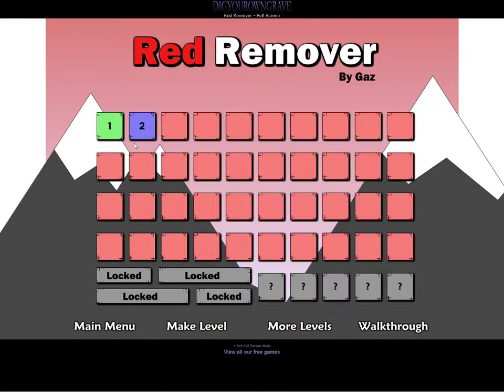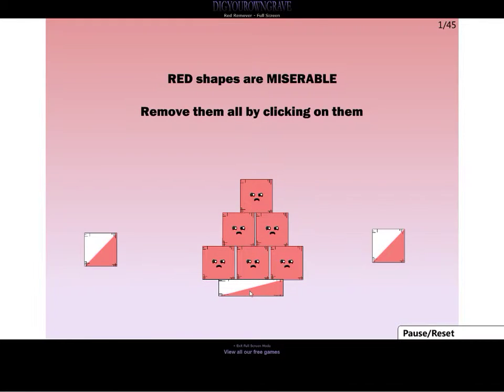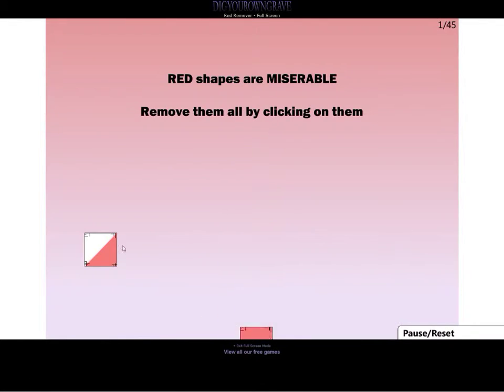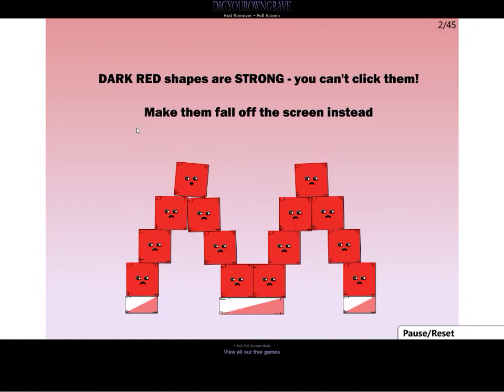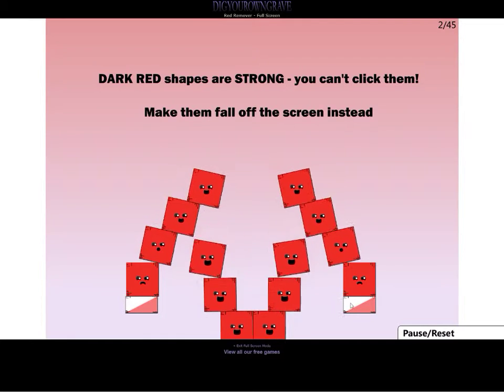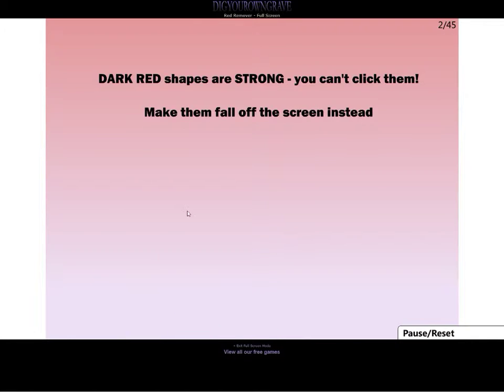For instance, you could beat this with three clicks: click, click, click, and that's the first level. The second level has dark red ones you can't get rid of by clicking them, but if I do this—click, click, click—three clicks and they're all gone.